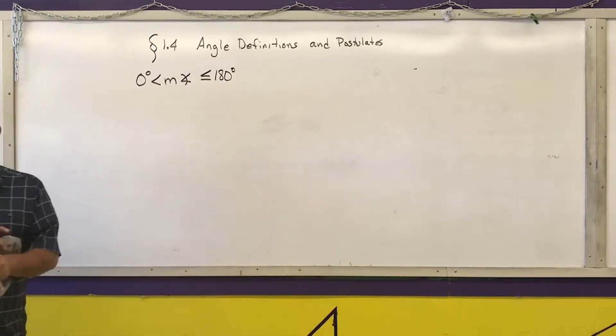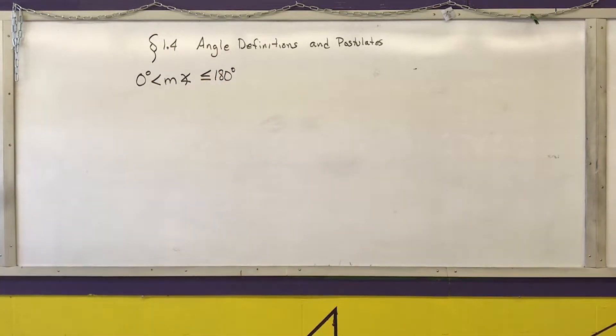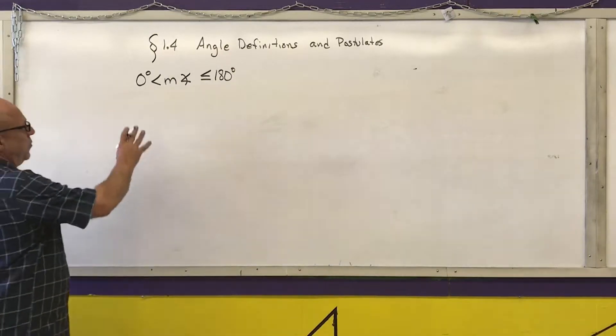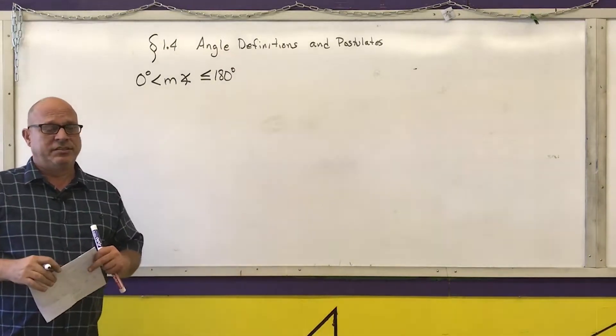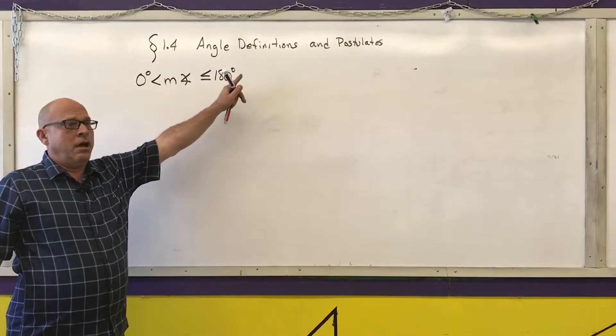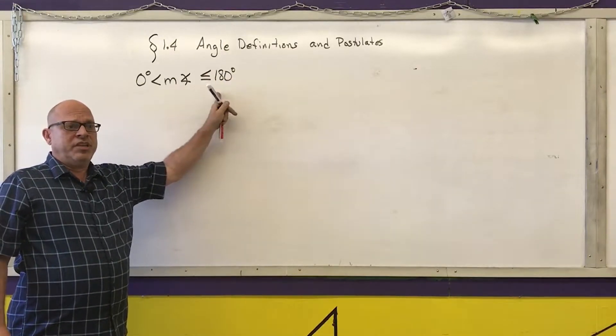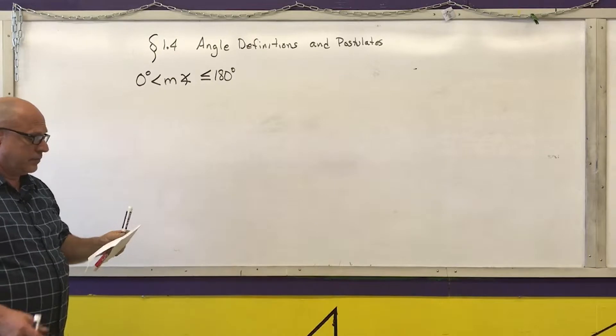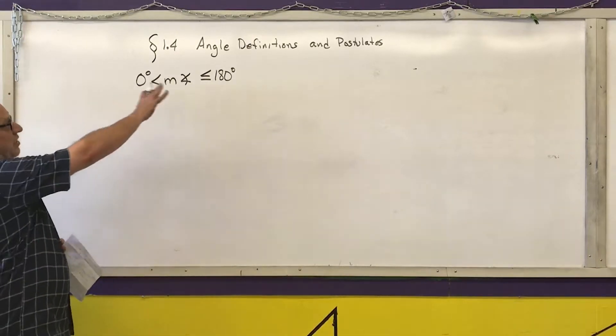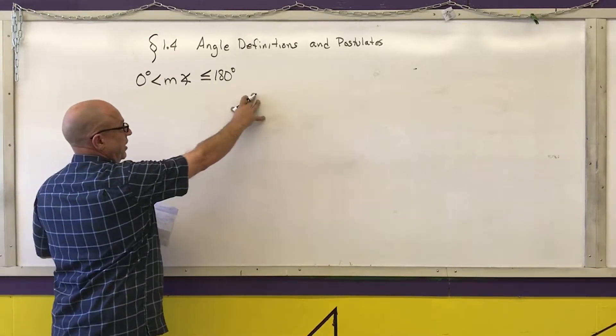So in geometry class, we start out by defining angles that are more than zero and less than 180 degrees. Make sure that you understand that definition.